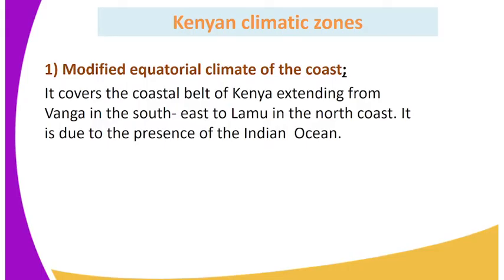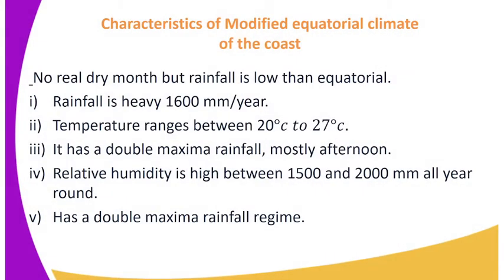Climatic zone 1: Modified equatorial climate of the coast. It covers the coastal belt of Kenya extending from Vanga in the southeast to Lamu in the north coast. It is due to the presence of the Indian Ocean. Characteristics include: no real dry month, but rainfall is lower than equatorial climate. Rainfall is heavy — 1,600 mm per year. Temperature ranges between 20°C to 27°C. It has a double maxima rainfall, mostly in the afternoon.